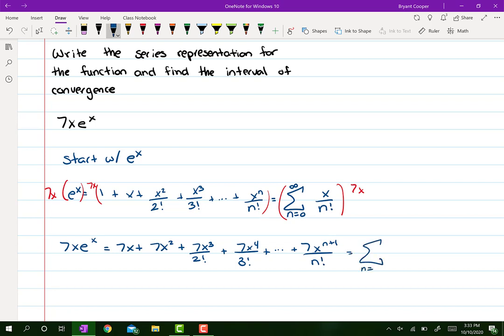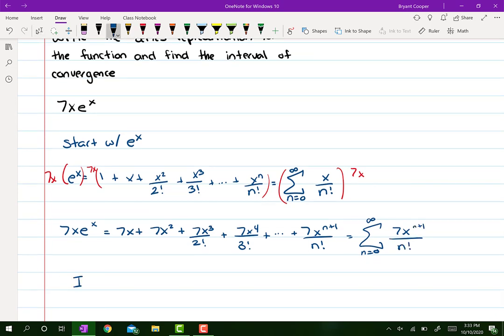And I get sigma from n equals 0 to infinity, 7x to the n plus 1 over n factorial. Because like I said before, it should be x to the n. And the interval of convergence is all real numbers because that's the interval of convergence for e to the x.